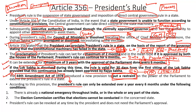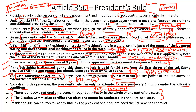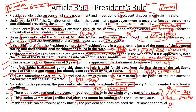According to the 44th Amendment, President's rule can be extended beyond one year only under two conditions: first, if a national emergency exists across the country, the state, or a part of the state; or second, if the Election Commission certifies that the right circumstances do not exist for fresh elections to be conducted. Only under these two conditions can President's rule be extended beyond one year with approval of both Houses of Parliament every six months, with the maximum period being three years.